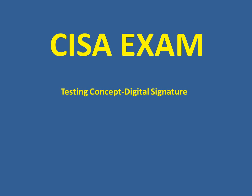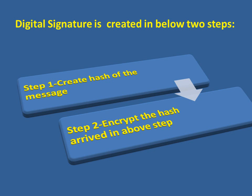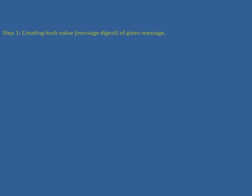Today's topic is digital signature. We need to remember two steps to understand how a digital signature is created. Step 1: create a hash of the message. Step 2: encrypt this particular hash that we arrived at in step 1. We will understand how this is done in the next slide.